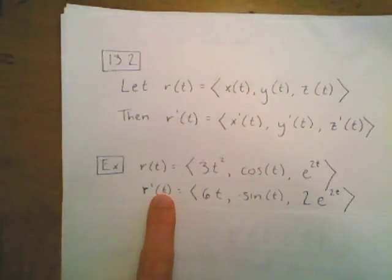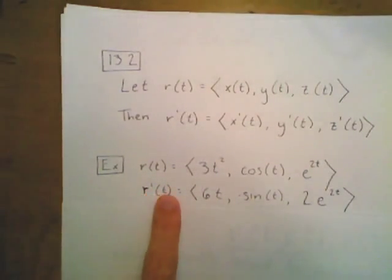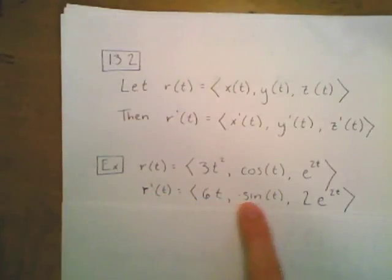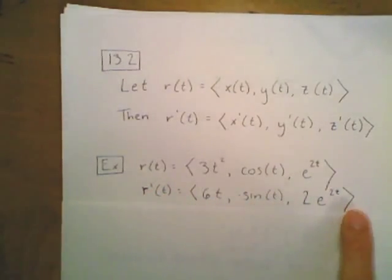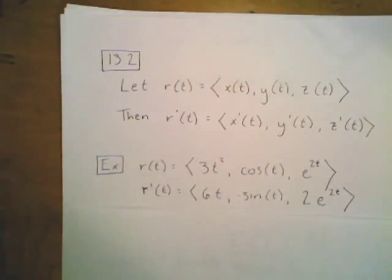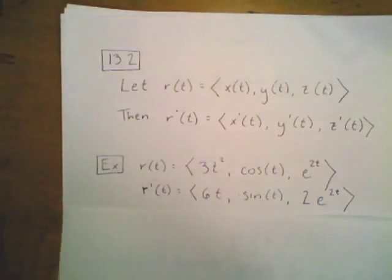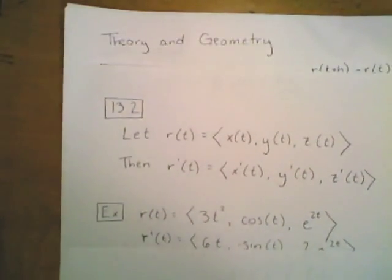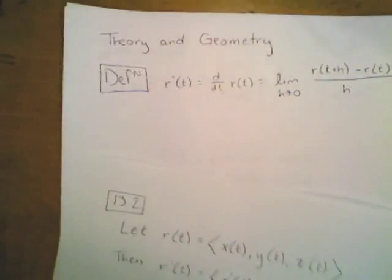If we wanted to, we could evaluate this function at a given fixed value of t, such as r prime of 1. So the derivative can be both evaluated at a single point or thought of as a vector-valued function.